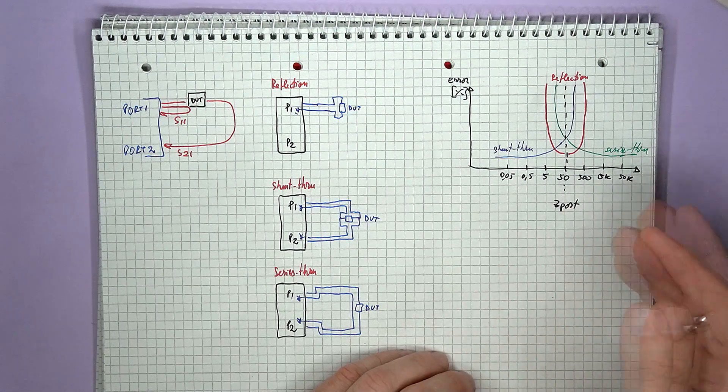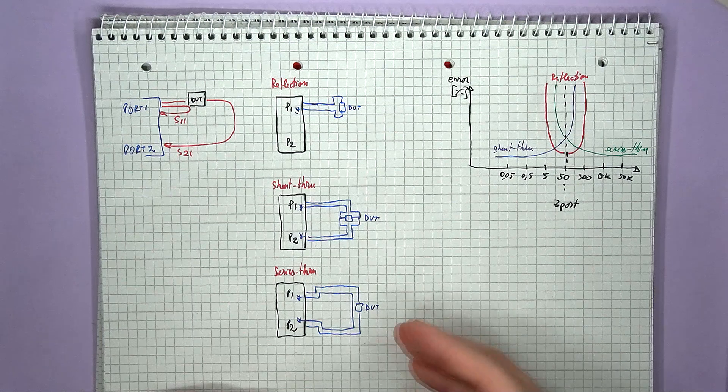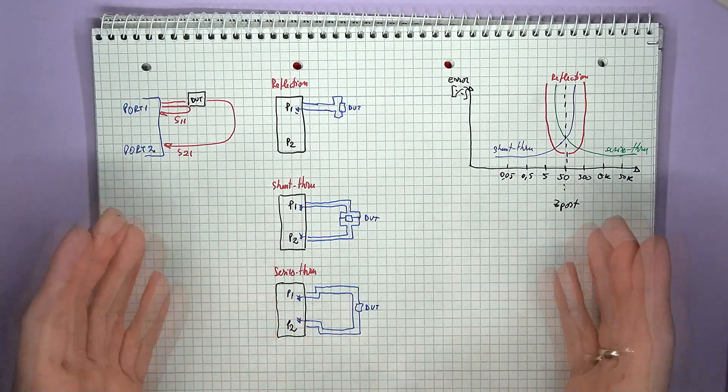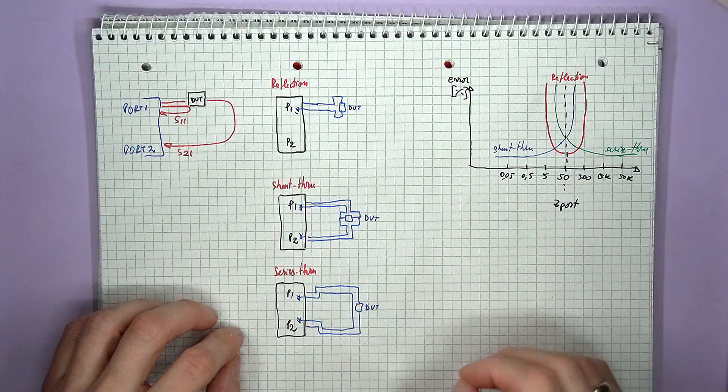And finally, values larger than 50 ohms are best covered by the series through method. If you want to measure things like chokes, common mode transformers, or just large impedance components, this third method will give the best results.